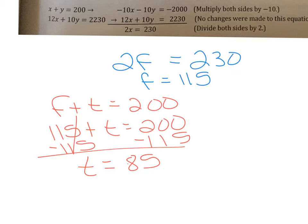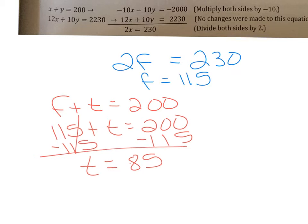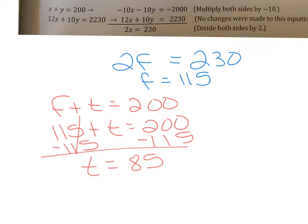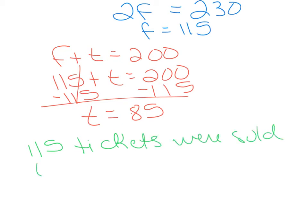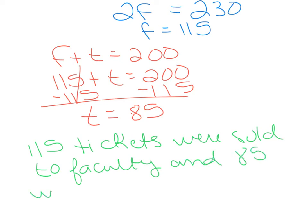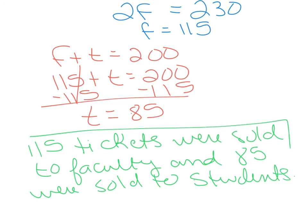We write the solution in a complete sentence: '115 tickets were sold to faculty and 85 were sold to students.' That's it for elimination — I'll see you in class.